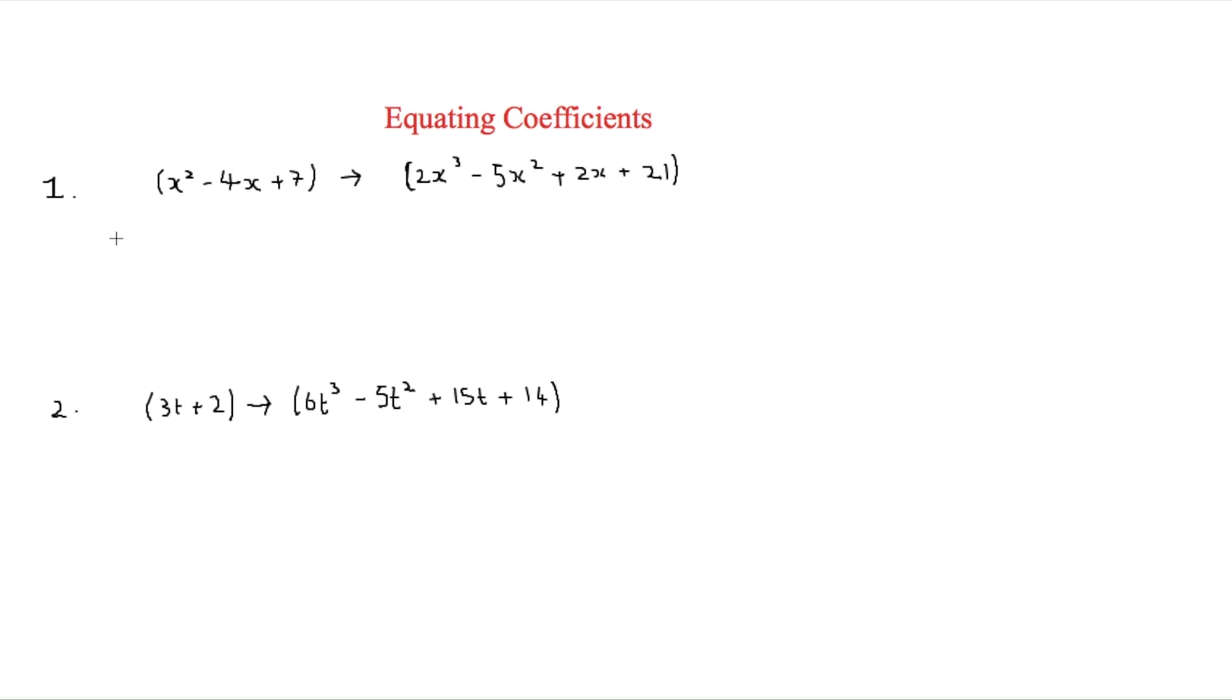Now this one's fairly easy because it's already an x squared going to an x cubed, so we know there's only going to be an x plus or minus something. And in order to do this we need to work out what a and b are.